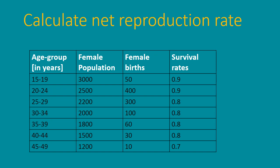Let us take a problem on calculating net reproduction rate. We have been presented with a table having age group in years: 15 to 19, 20 to 24, and so on, with female population, female births, and an extra column added for the survival rate.